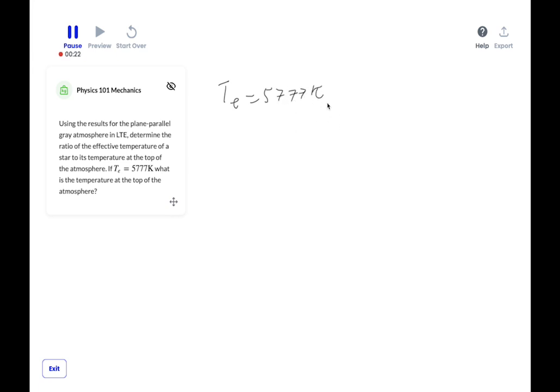Okay, so using equation 9.53 from the book, we can see that at the top of a star's atmosphere, where tau v equals 0, T to the 4th equals Te to the 4th over 2.